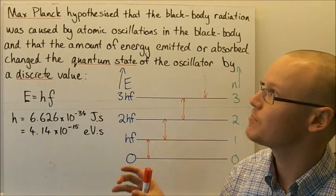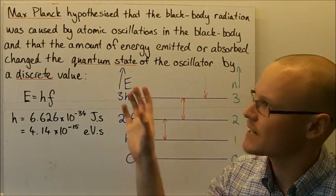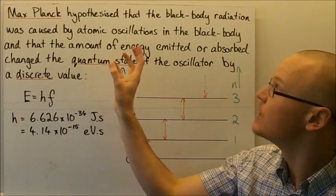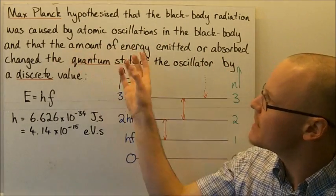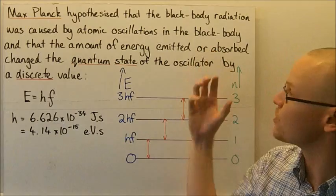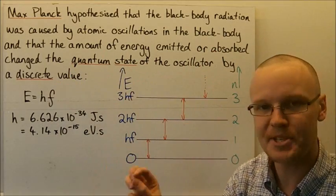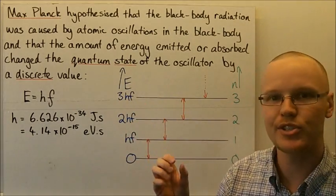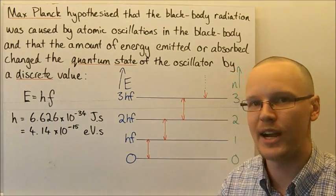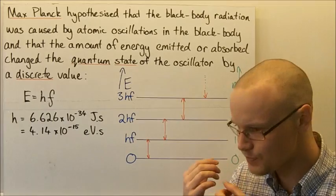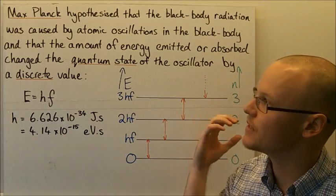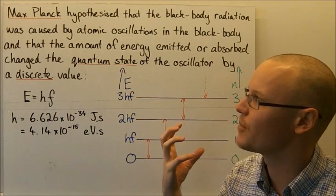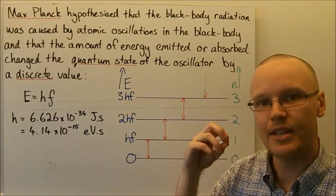The German physicist Max Planck hypothesised that black body radiation is caused by the oscillation — the actual vibration of atoms — in the black body. The amount of energy emitted or absorbed by the black body changes the quantum state of the oscillator by a discrete value. The quantum state refers to the state of vibration that the oscillator is in — the extent to which the oscillator is vibrating.